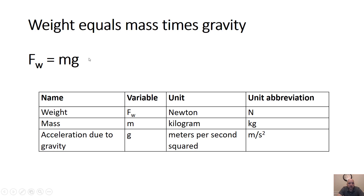Here's your equation you're going to use a lot today: Fw equals mg — weight equals mass times gravity. The unit of any force, and that's why it has F subscript W, is Newtons or capital N. Mass is m, and kilogram or kg is the MKS unit for that. And acceleration due to gravity is g, in meters per second squared.